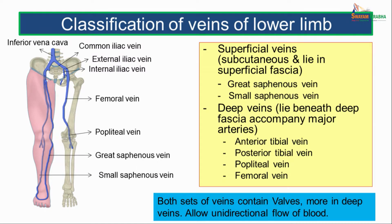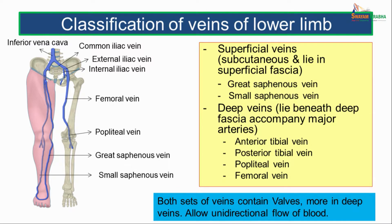Let us classify the veins of the lower limb. Superficial veins lie subcutaneously in the superficial fascia and include the great saphenous vein and the small saphenous vein. The deep veins lie beneath the deep fascia and accompany the major arteries. Below the knee they are seen as venae comitantes — a pair accompanying the arteries — whereas above the knee joint they are single named veins, for example: anterior tibial vein, posterior tibial vein, popliteal vein, and femoral vein.